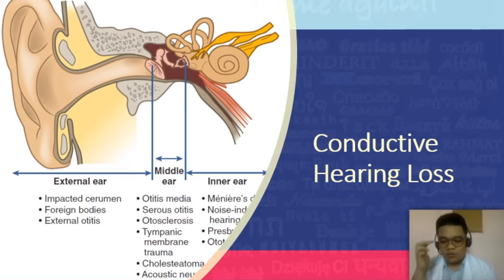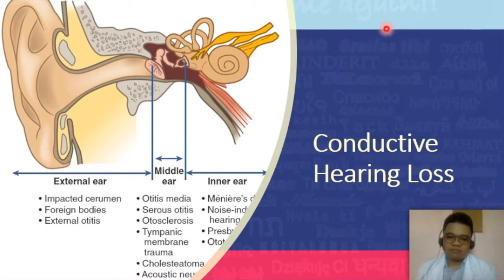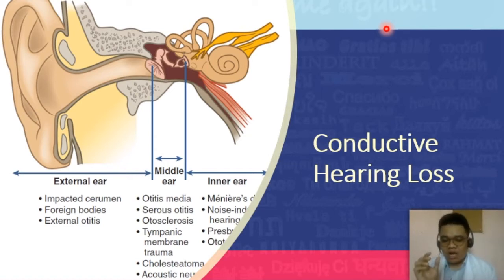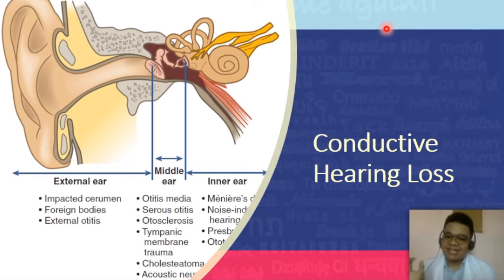Then you have your otosclerosis. Remember your ossicles — malleus, incus, and stapes. In otosclerosis, there is hardening of the bone, which could be a genetic disorder. Specifically, the stapes could have an effect on sound transmission to the inner ear, later causing conductive hearing loss. What happens is that the hardened bones are also attached to one another, so instead of the malleus, incus, and stapes transmitting vibrations from one bone to another, they will not be able to move — and therefore not transmit the signal to your inner ear.